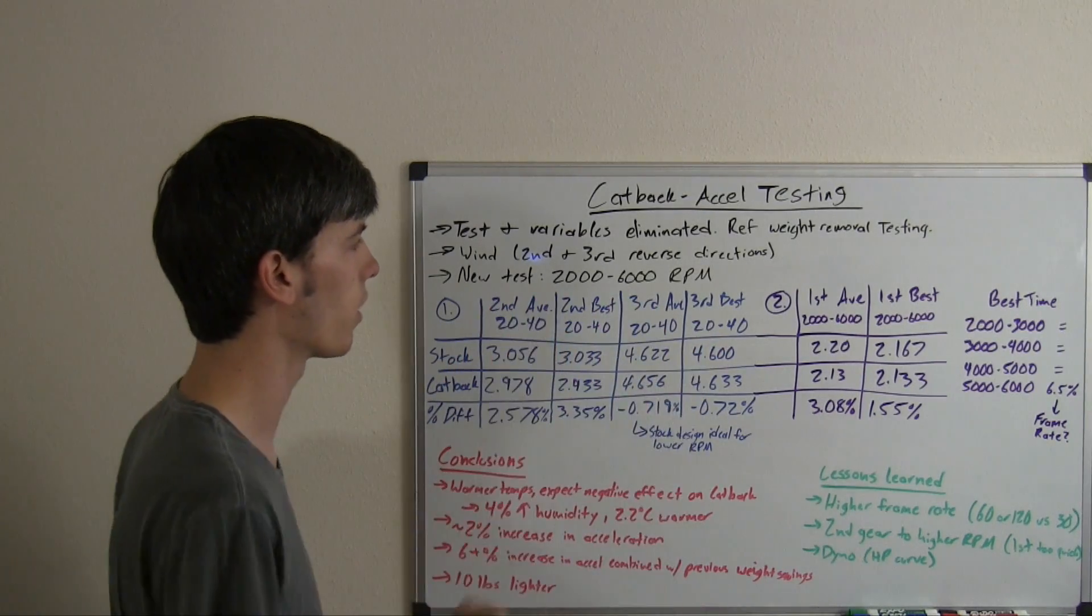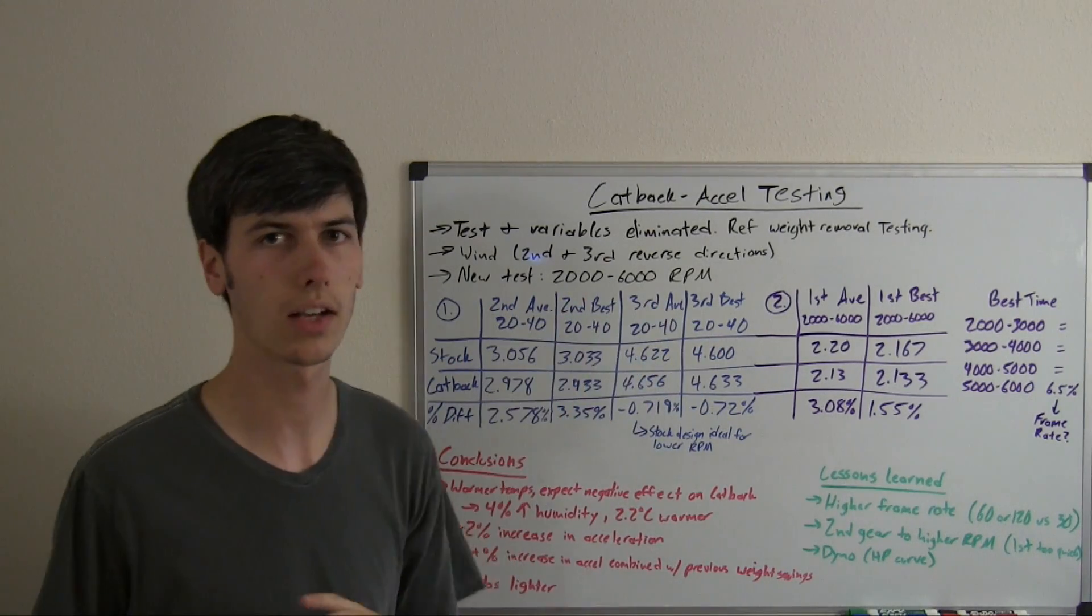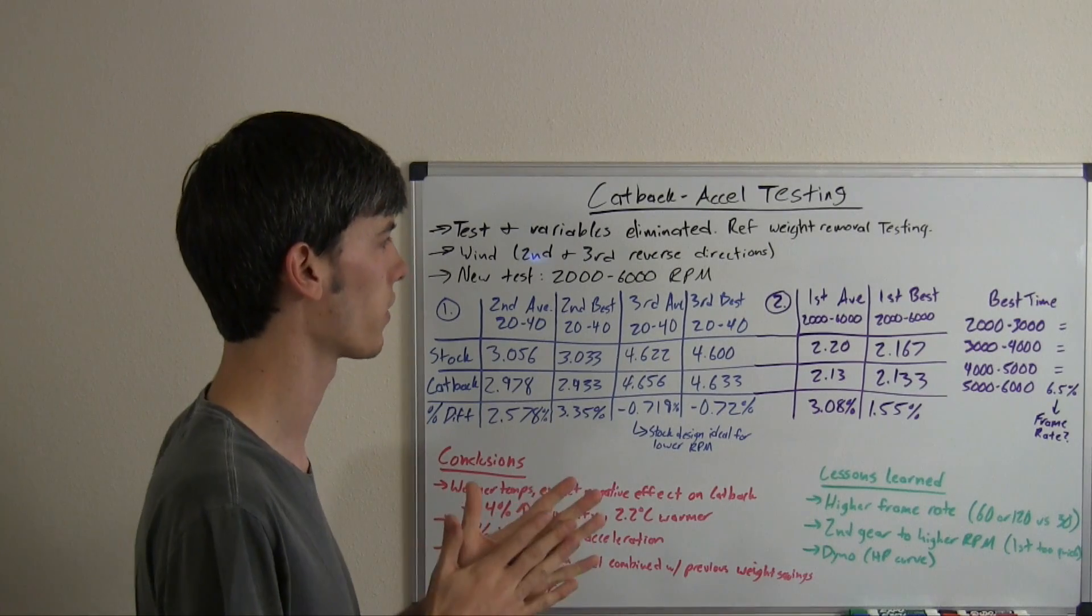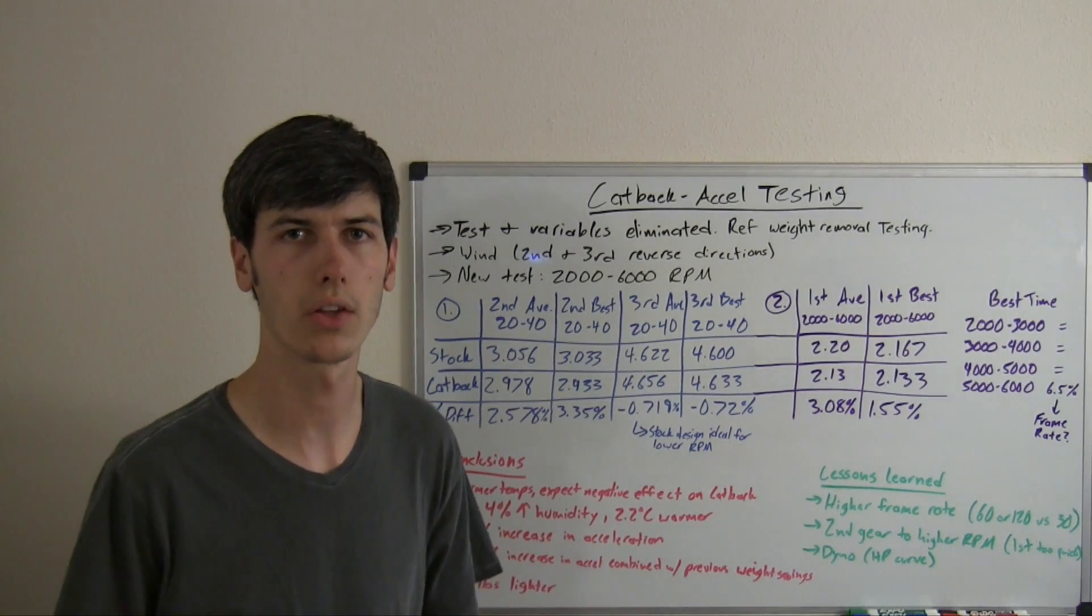This was across a higher RPM rev range. Now let's take a look at the third gear acceleration testing before and after installing a cat-back exhaust.